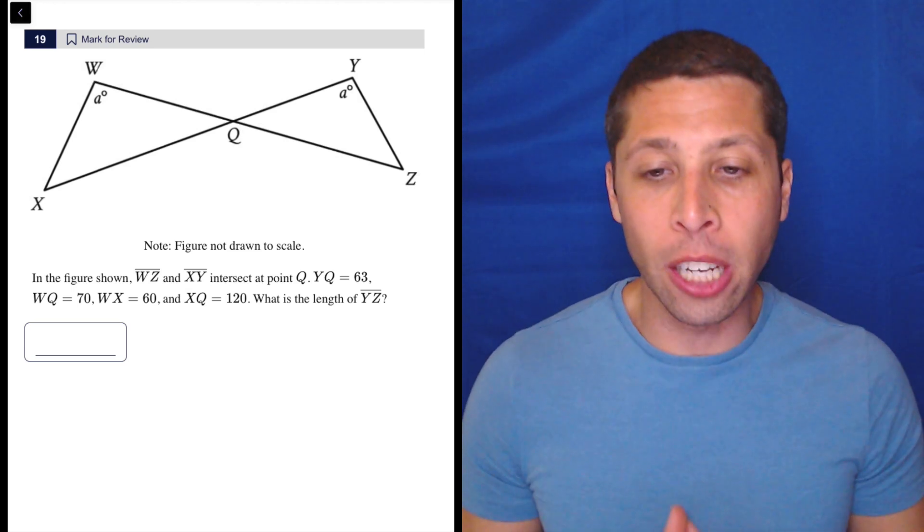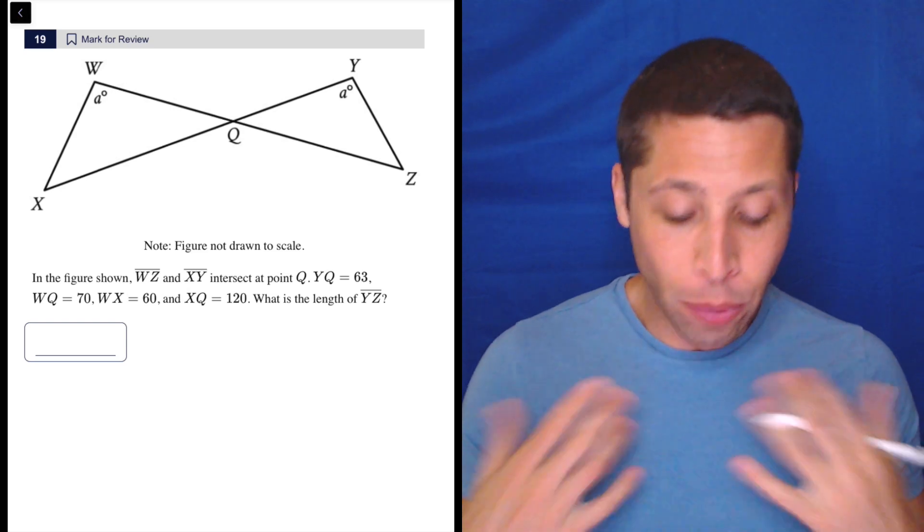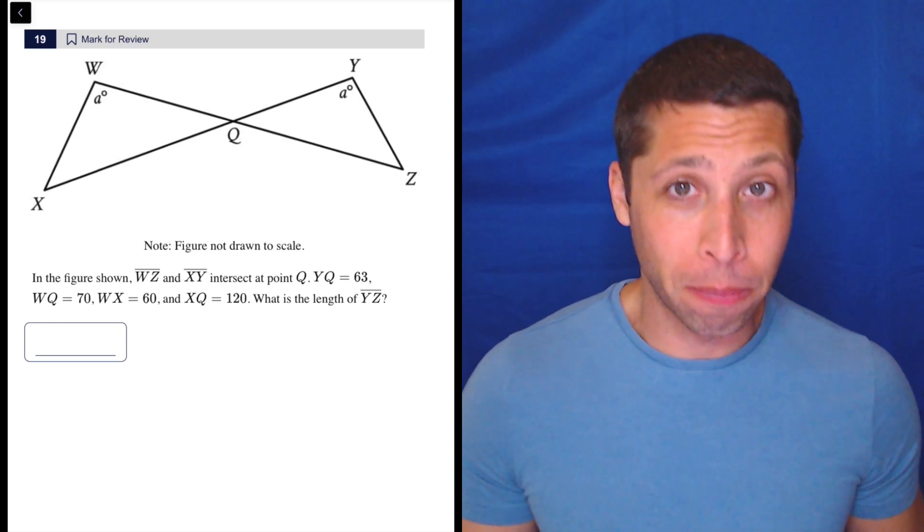Ideally, you should look at this and instantly know it's about similar triangles. We have to set up a proportion. The reason I know that is they're two triangles and they look similar, right?